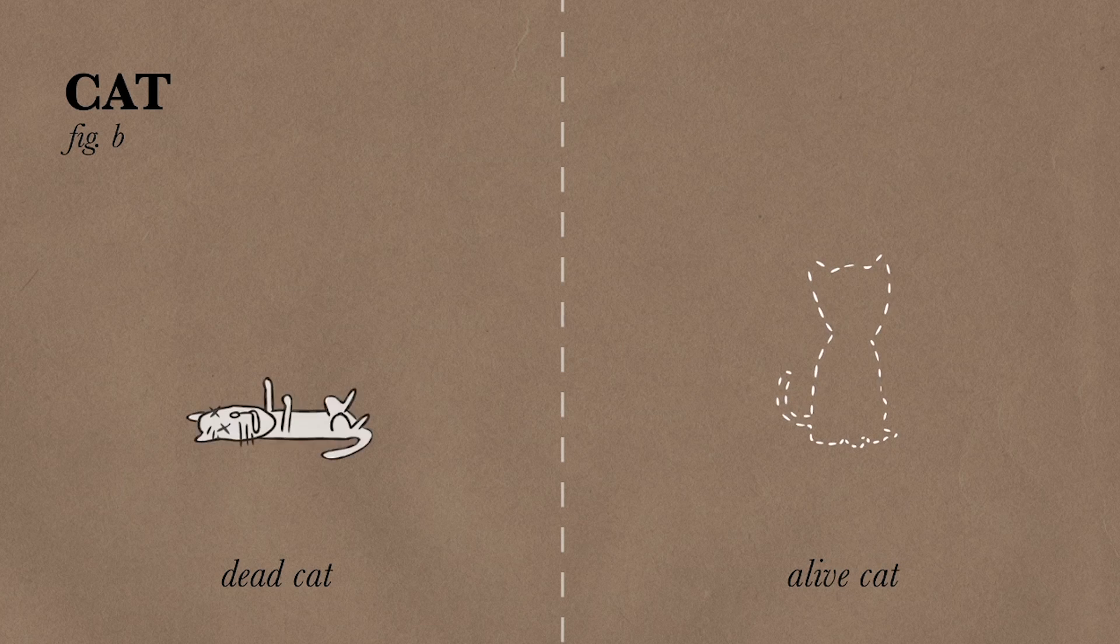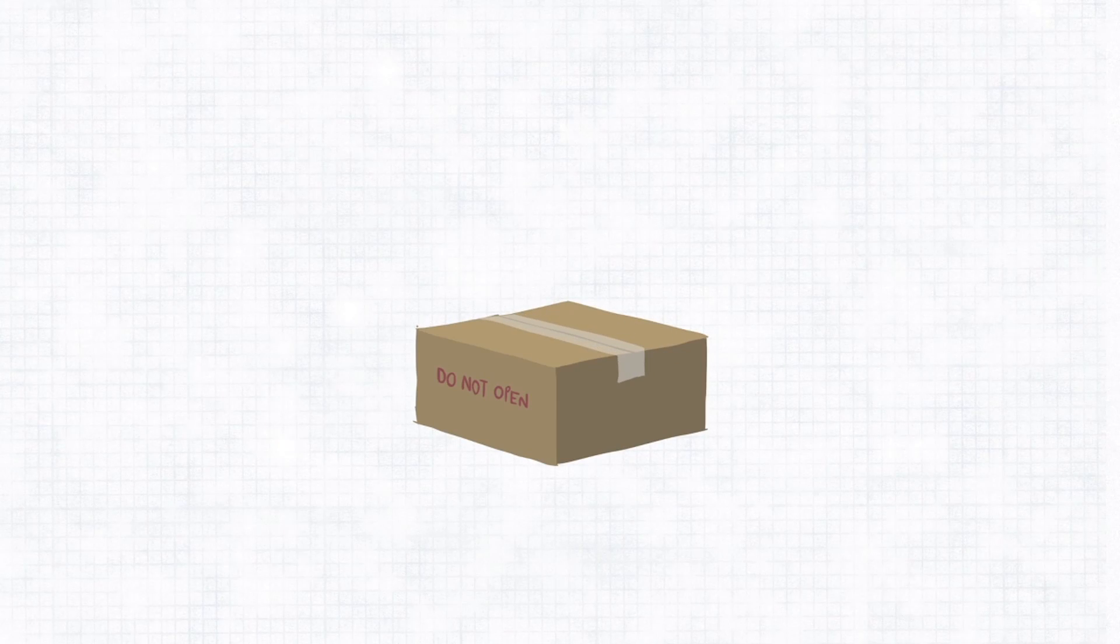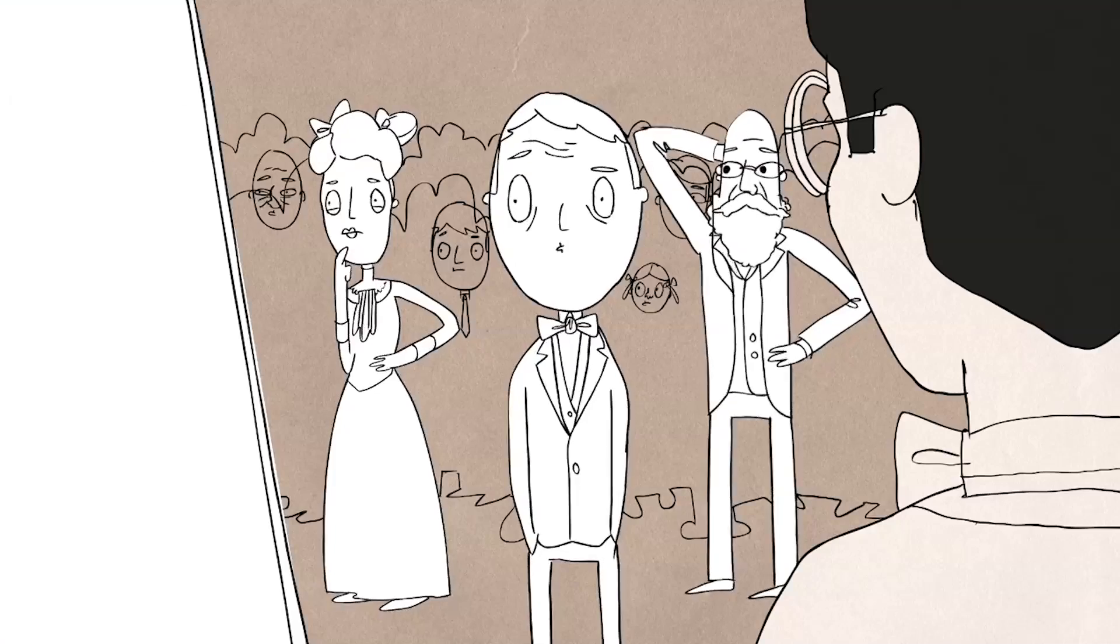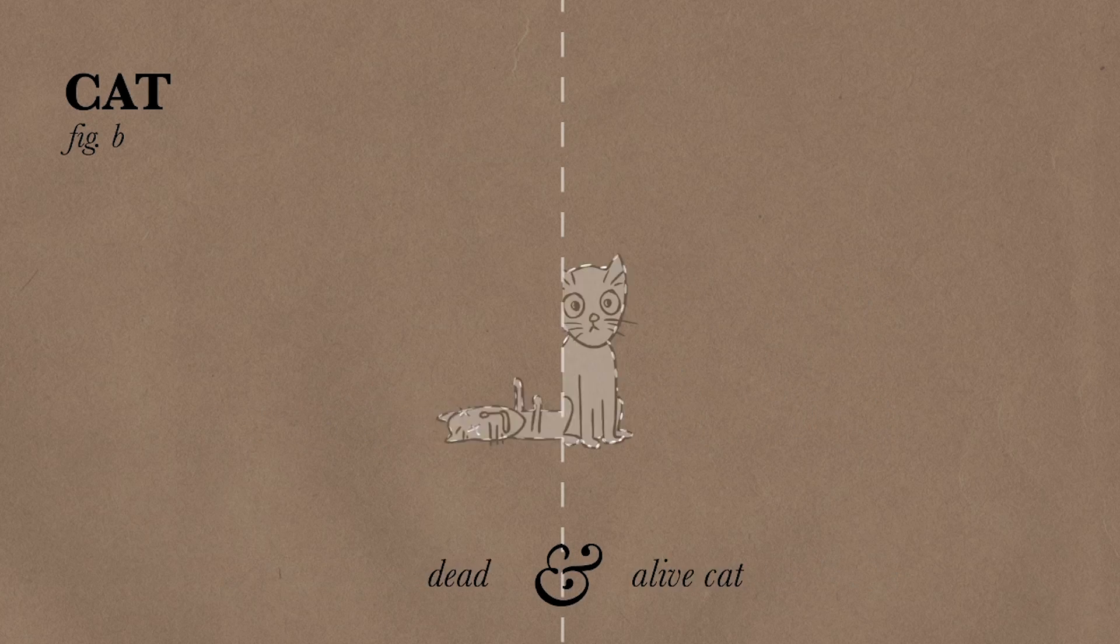You can't actually say the cat is either dead or alive, because you can't tell. You can't even open the box. In a sense, you can't even say whether or not the cat is in the box. So you actually have to accept the fact that the cat is both dead and alive simultaneously.